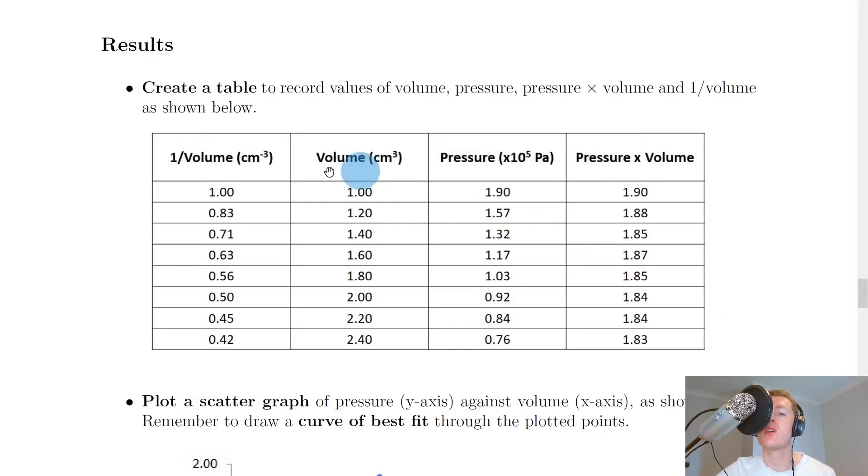During the experiment, you could write down your results in a table that looks like this. Create a table to record values of volume, pressure, pressure times volume, and 1 over volume. We'll explain later why we've done pressure times volume and 1 over volume. For now, just look at the volume and pressure columns, which you would write down during the experiment. Let's say we change the volume every 0.2 centimetres cubed or millilitres, then wrote down the corresponding pressure value in times 10 to the 5 pascals. There are 8 readings we took for volume and pressure.